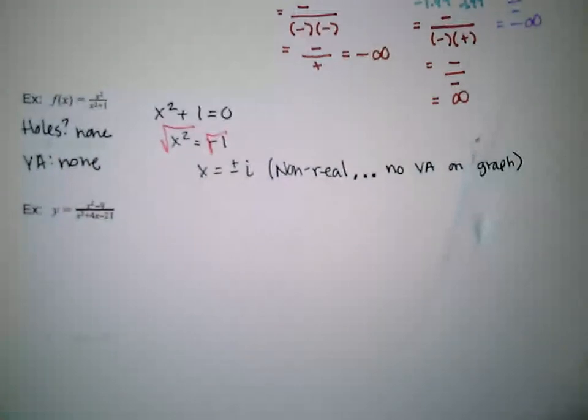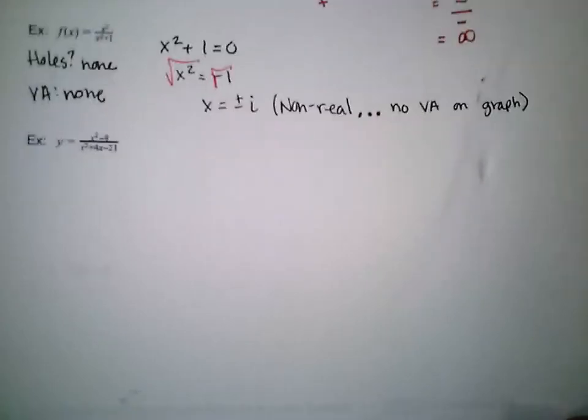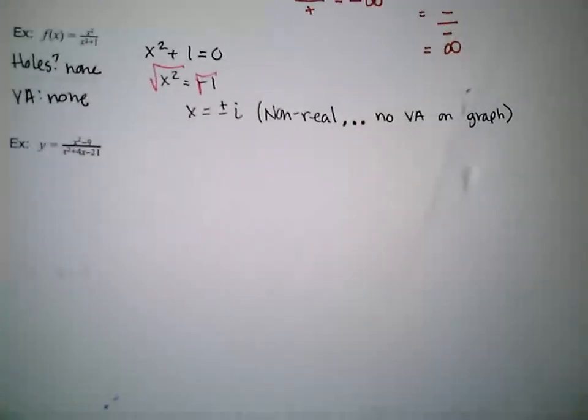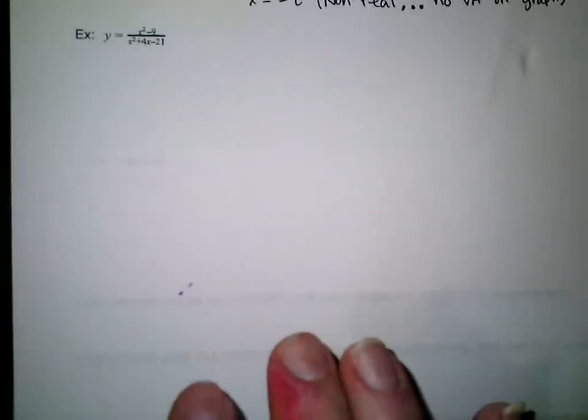So that can happen. Let's look at our third one: y equals x squared minus 9 over x squared plus 4x minus 21.